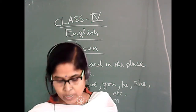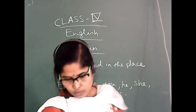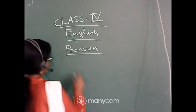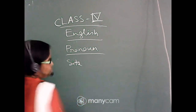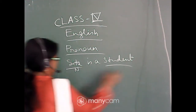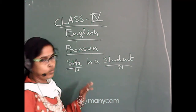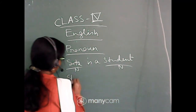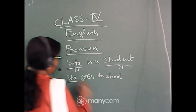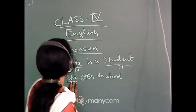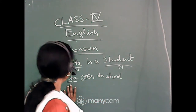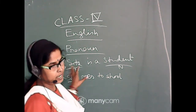Students, now come to page number 46. Why do we use pronouns? For example, Shita is a student — that is a noun, isn't it? In the next sentence, when we want to talk about Shita, we can write: she goes to school. Here, 'she' refers to Shita. She is used in the place of Shita. So we use pronouns only to refer to the noun — we don't need to write the name again and again.